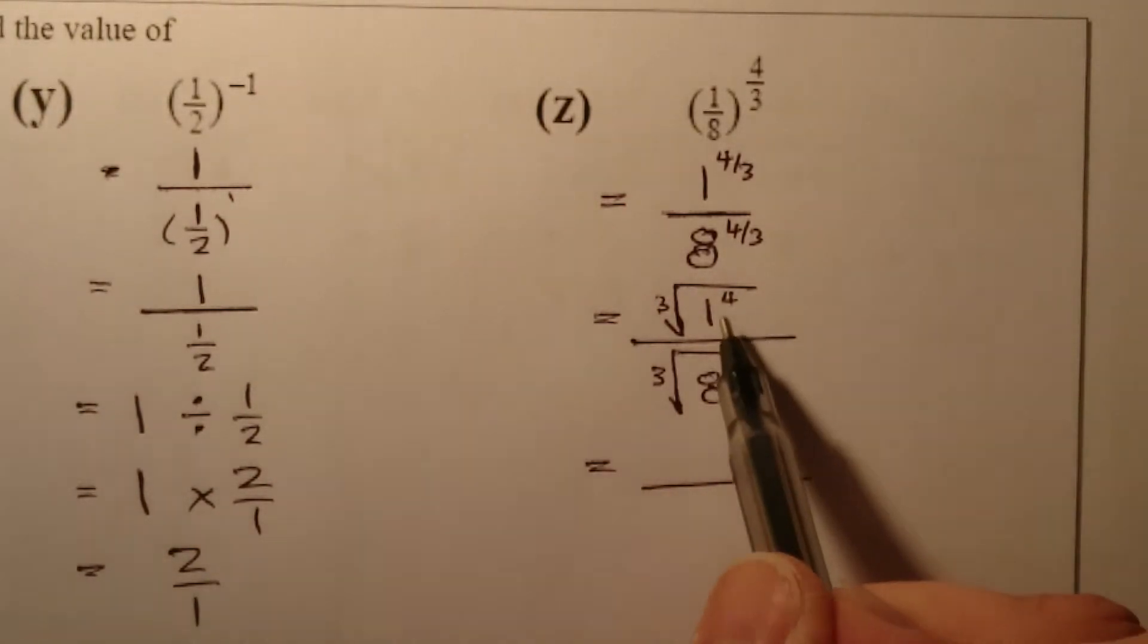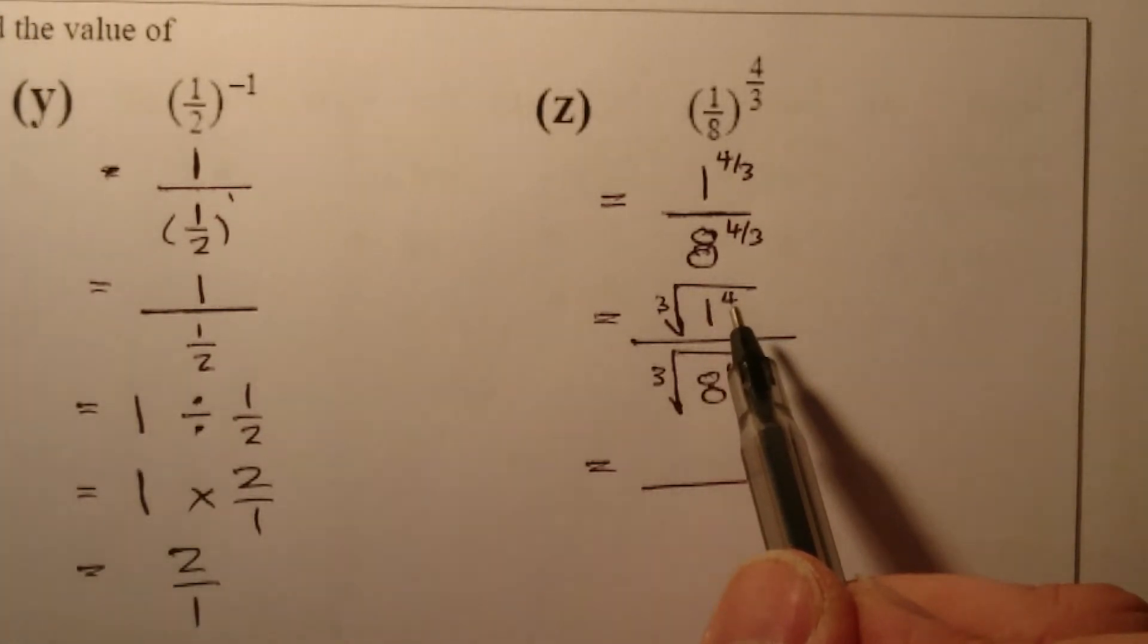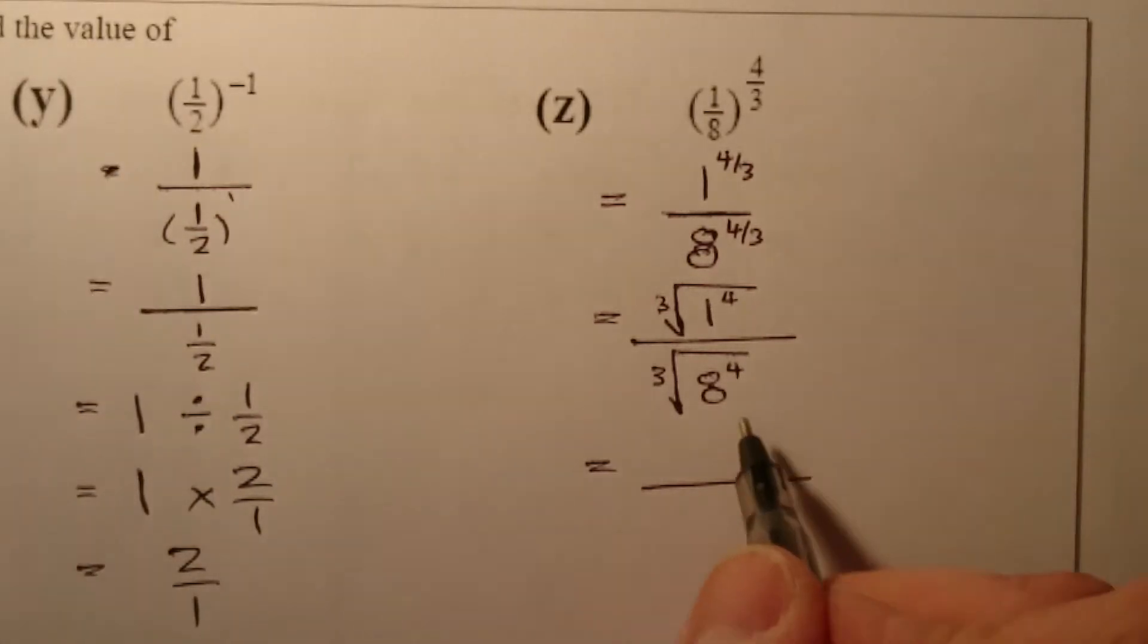Working out the top, we have cube root of one, well that'll be one times one times one, which gives me one. And then one to the power of four, one times one times one is going to be one as well. So there's a one on the top there. The cube root of eight, well that's going to give me two because two times two times two is going to give me eight.